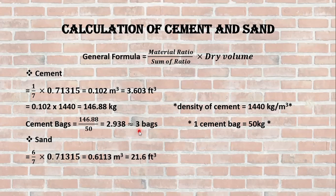For sand, similarly 6 parts of sand divided by the sum of ratio times the dry volume gives 21.6 cubic feet of sand required for the construction of wall.